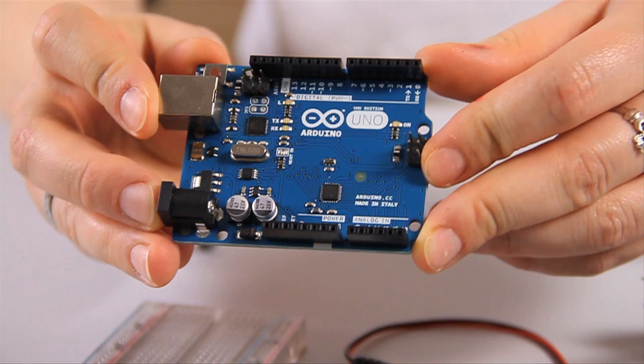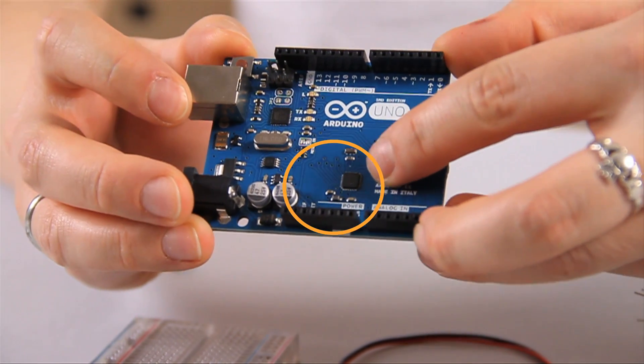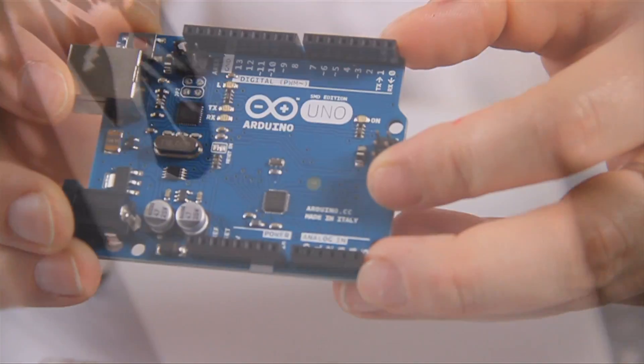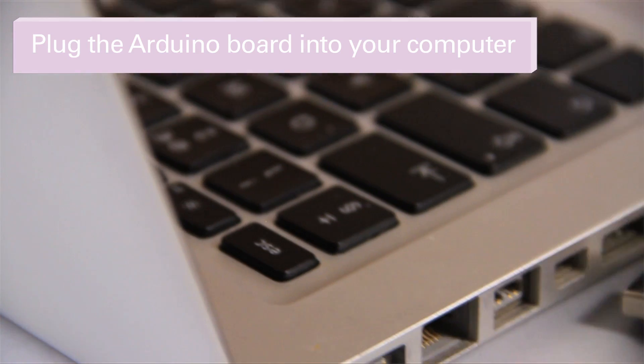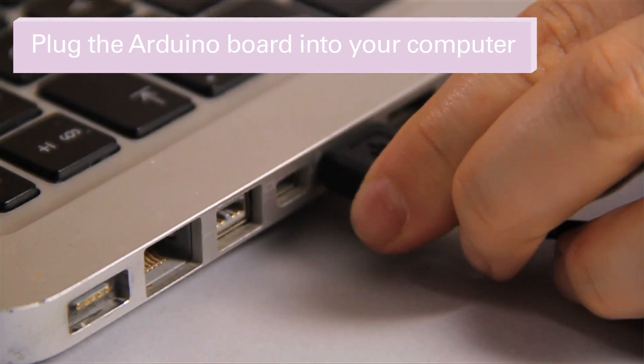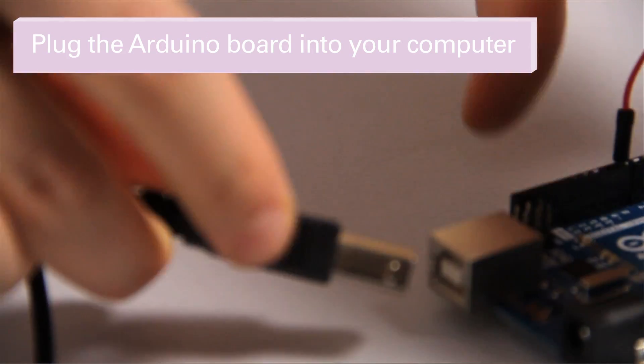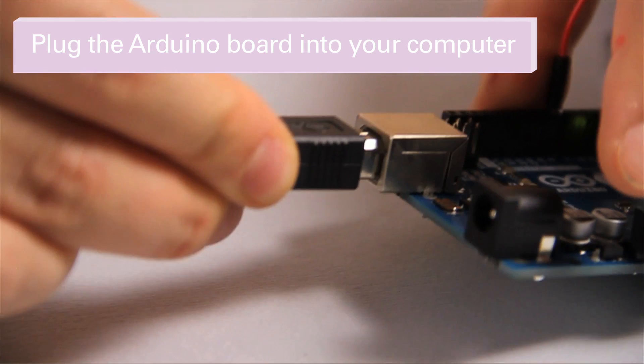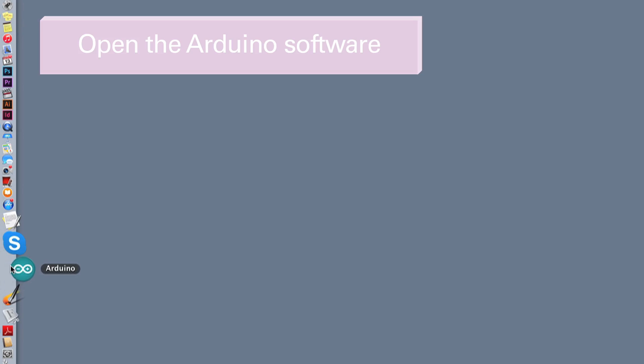The Arduino's brain is the microcontroller, which is this part here. So the microcontroller reads inputs like switches and sensors to create outputs like flashing lights, making sounds and moving motors. Arduino is widely used by hobbyists, artists, engineers and young people around the world.